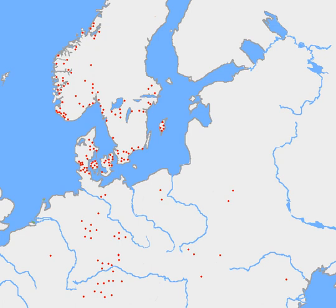The oldest known runic inscription dates to 160 AD and is found on the Vimos comb discovered in the bog of Vimos, Funen. The inscription reads Harja, either a personal name or an epithet meaning warrior. Another early inscription is found on the Thorsberg chape (200 AD), probably containing the theonym Ullr. The typically Scandinavian runestones begin to show the transition to Younger Futhark from the 6th century, with transitional examples like the Bjorketorp or Stentoften stones. The longest known inscription in the Elder Futhark consists of some 200 characters and is found on the early 8th-century Eggjum stone, and may even contain a stanza of Old Norse poetry.